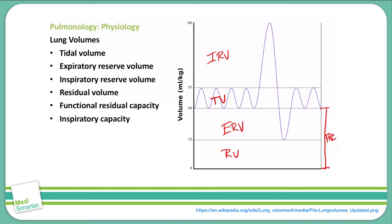Next is the inspiratory capacity. The inspiratory capacity is the inspiratory reserve volume plus the tidal volume. It is measured from the bottom of the tidal volume all the way up to the top of the inspiratory reserve volume.